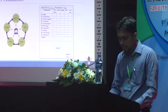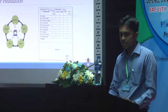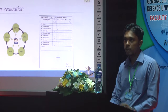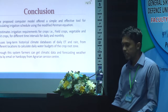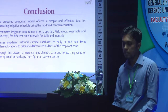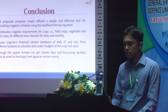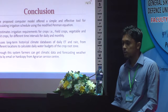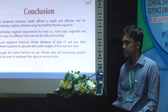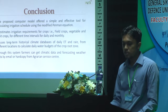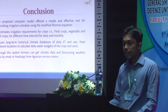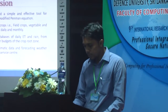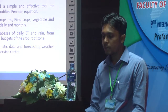The system was evaluated at the Agraria Service Centre using a questionnaire format. The proposed computer model is a simple and effective tool for calculating the irrigation schedule using the modified Penman equation. It estimates irrigation requirements for any crop — whether a green crop, paddy, or others — on a daily or monthly basis, using a long-term historical climate database for daily water and rainfall data across different locations to calculate the daily water budget for the crop zone.